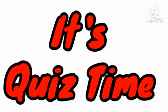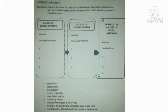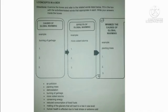Before we end our lesson, it's quiz time! Your activity is entitled 'Concept in a Box.' Directions: Examine the boxes and refer to the related words listed below. Fill in the box with the activities or related words appropriate for each. Write your answer inside the boxes. On the first box, write the different causes of global warming. On the second box, the different effects of global warming. And on the last box, write how to minimize the causes of global warming. The submission of your output will be tomorrow at exactly 8 o'clock in the morning.